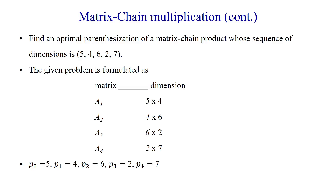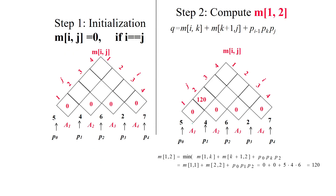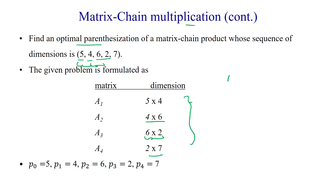Here we will see the example of matrix chain multiplication by applying optimal parenthesis to reduce the number of scalar multiplications. The given problem has dimensions: first matrix is 5×4, second matrix is 4×6, third matrix is 6×2, and the fourth matrix is 2×7. We are going to multiply all four matrices A1, A2, A3, A4, and we can apply different kinds of parenthesis for multiplication.